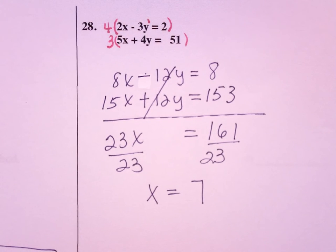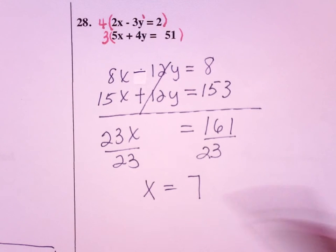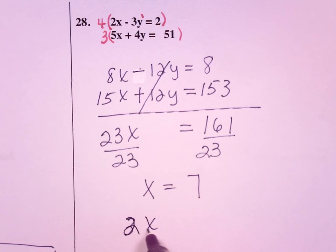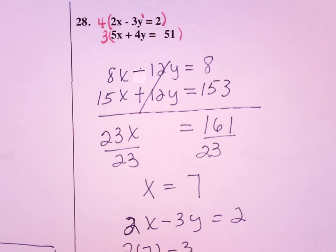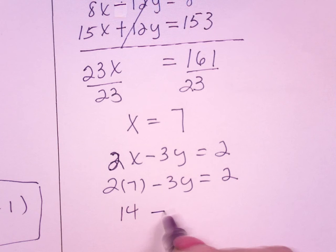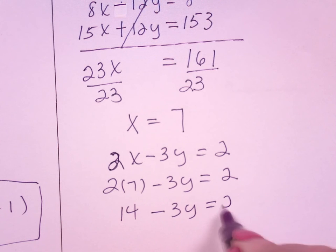And now I just need to pick an equation to solve for y. It doesn't matter which one I do. If x equals 7, 2x minus 3y equals 2. So 2 times 7 minus 3y equals 2.